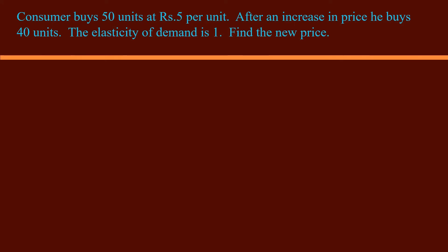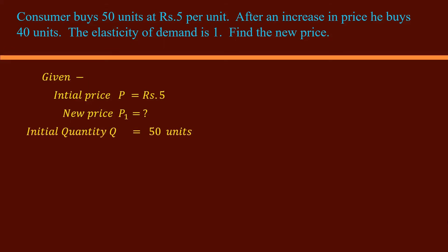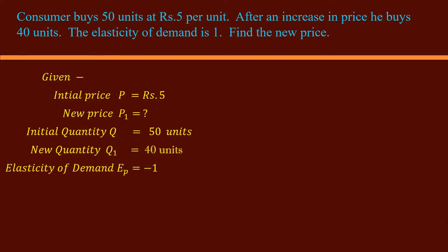The problem: A consumer buys 50 units at 5 rupees per unit. After an increase in price, he buys 40 units. The elasticity of demand is 1. Find the new price. State the given values. Initial price P: 5 rupees. New price P1: we have to find. Initial quantity Q: 50 units. New quantity Q1: 40 units. Elasticity of demand: negative 1. The negative sign is not given in the problem — we have to attach it.